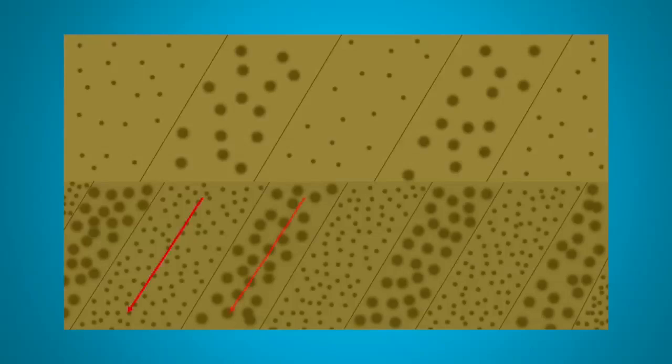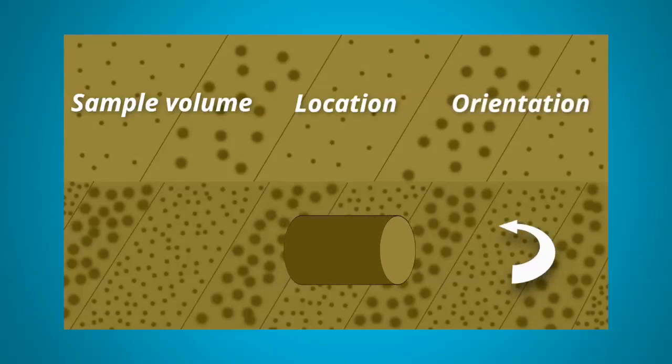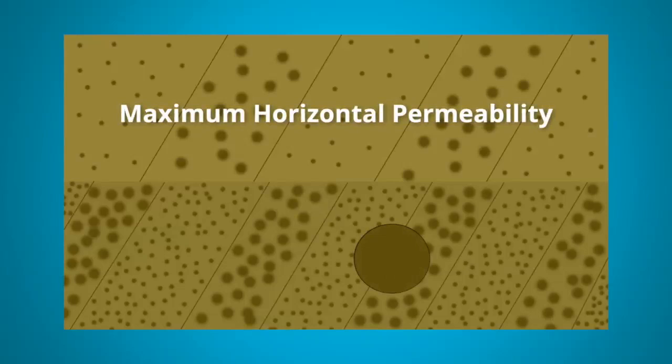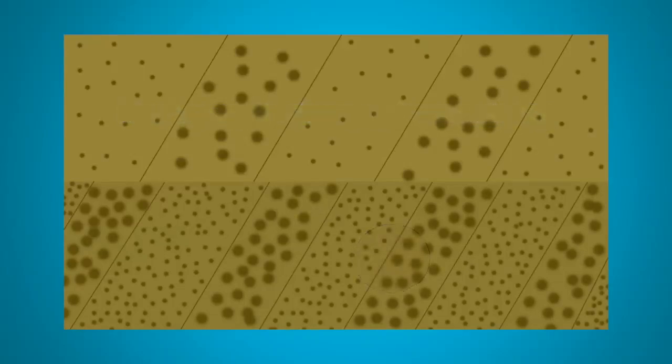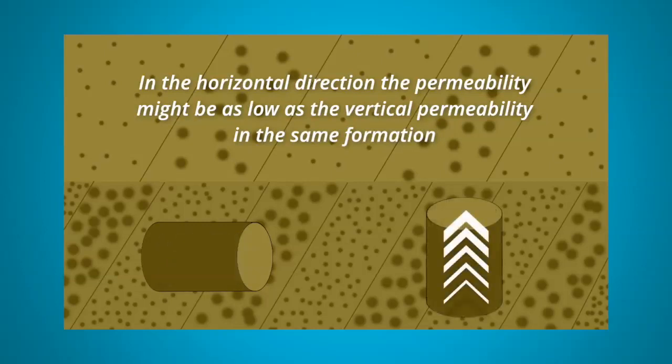Sometimes reservoir sandstones are cross-bedded. This means that sample volume, location, orientation become much more of an issue. Usually, plugs are taken parallel to the lamination, sometimes with a perpendicular measurement across the lamination. This will give the maximum horizontal permeability. In the horizontal direction, the permeability might be as low as the vertical permeability in the same formation.